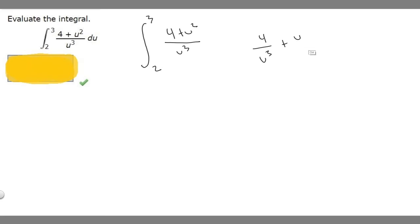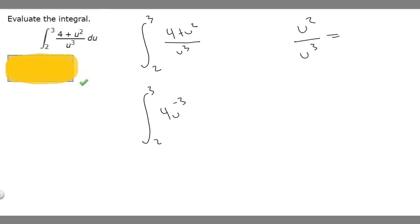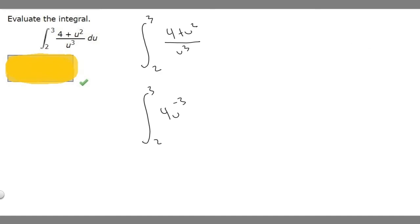Now that we have that, let's rewrite our integral from 2 to 3 as 4u to the minus 3. Then we still have the second part: u squared over u cubed. Using the same exponent rule — top exponent minus the bottom — this is the same as u to the minus 1. So we rewrite that as plus u to the minus 1.